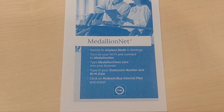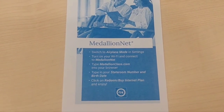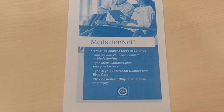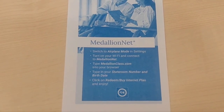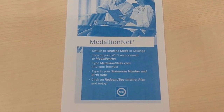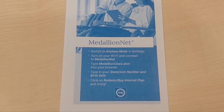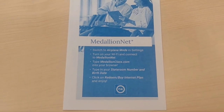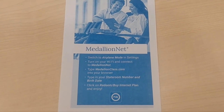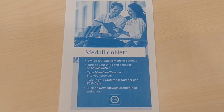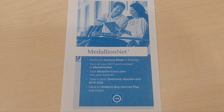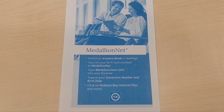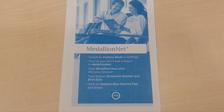Then type medallionclass.com in your internet browser, and enter your stateroom number and birth date. Click on 'Redeem My Internet Plan.' If you have pre-purchased your internet plan, you'll redeem it there. If you haven't purchased it yet, you can go ahead and buy it online as well.